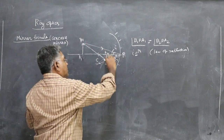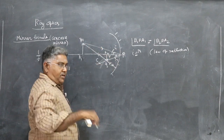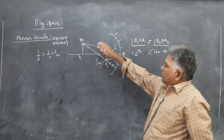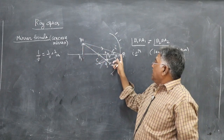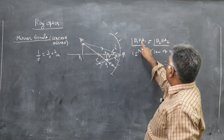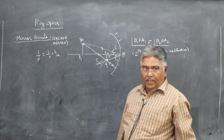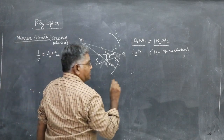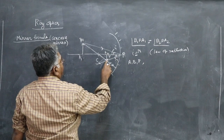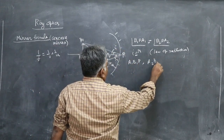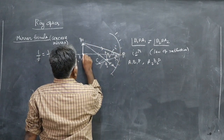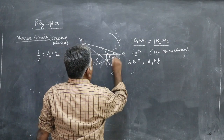This ray retraces the path because it is incident along the normal — it gets reflected back along the same path. So the two rays we have chosen are sufficient; you can take other rays, but it is not necessary. Now we consider triangles A₁B₁P and A₂B₂P for the first pair of similar triangles.